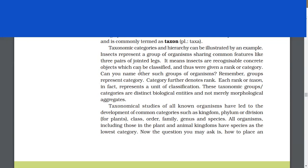These taxonomic groups or categories are distinct biological entities and not merely morphological aggregates. Taxonomical studies of all known organisms have led to the development of common categories such as kingdom, phylum or division, class, order, family, genus, and species. All organisms, including those in the plant and animal kingdoms, have species as the lowest category.